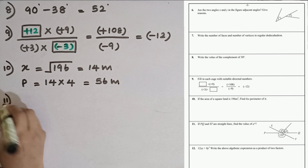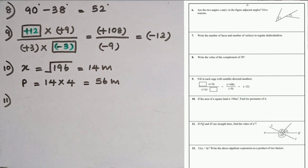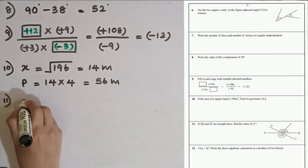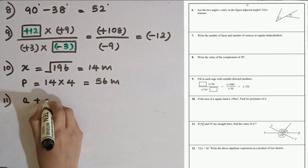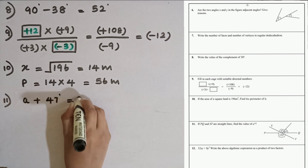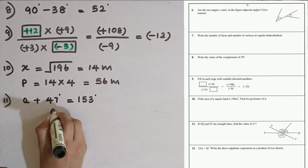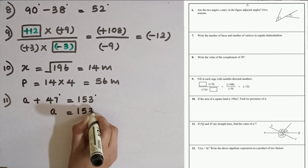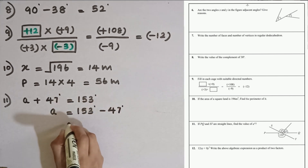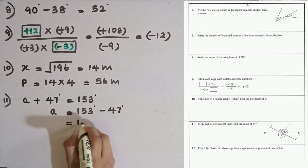Question number 11. If PQ and ST are straight lines, find the value of A. Since these two are straight lines, angle 153° and angle (A + 47°) are vertically opposite angles. So we write the equation: A plus 47 degrees equals 153 degrees. A equals 153 minus 47, so the value is 106 degrees.